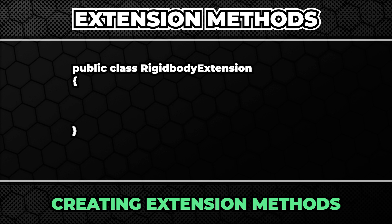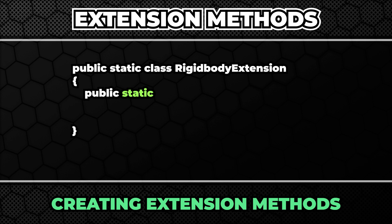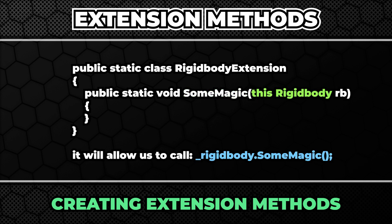We start by creating a new class. We give it the name of the type we will extend, followed by the word 'Extension'. Of course this is not a hard requirement, it's just a good practice. Then we make the class static and we are ready to create our first extension method. We start by creating a static method — this is very important, extension methods have to be static. Then as usual we define the return type and the name of the method. The first parameter preceded by the word 'this' indicates which type we extend. Usually if you created an extension method and it doesn't show up, it means you have forgotten the word 'this' before the first parameter.